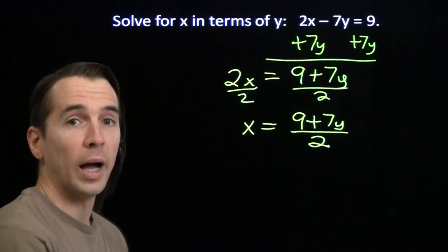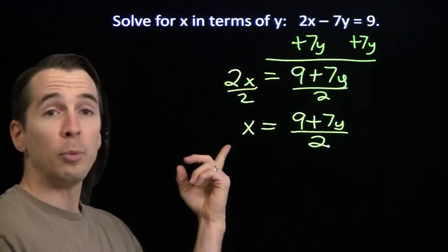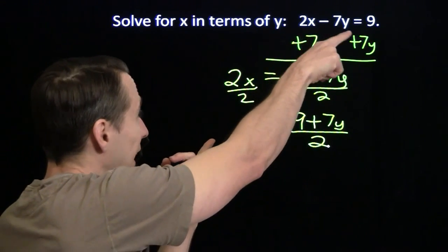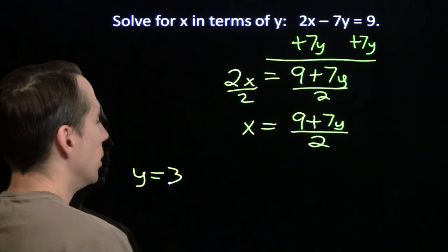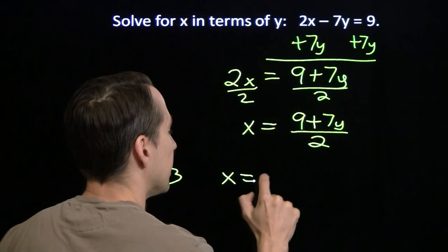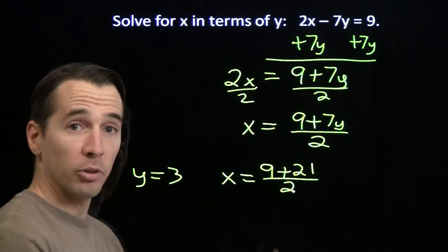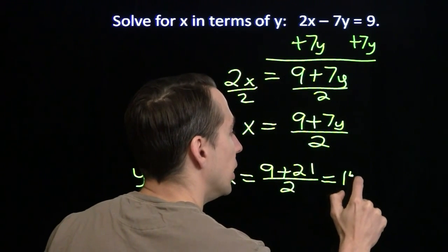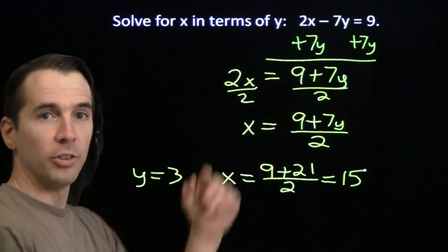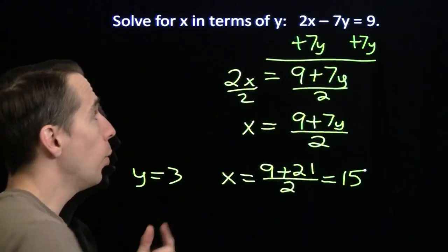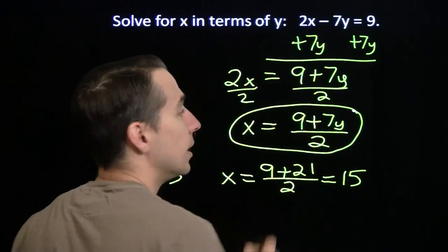And we've solved for x in terms of y. And this gives us a formula. So whenever we figure out what y is or decide what we want y to be, we just throw it in here and we'll get the corresponding x such that those x and y satisfy this equation. Let's give it a try. Suppose we decide y equals 3. Put that in here. We'll get x equals 9 plus 3 times 7 is 21 divided by 2. 9 plus 21 is 30. Divide that by 2, you get 15. Now let's test. X equals 15. Put that up here. 2 times 15 is 30. 7 times 3 is 21. 30 minus 21 is 9. It works. This is x in terms of y.